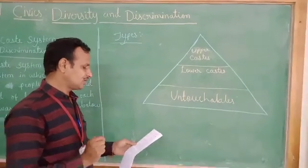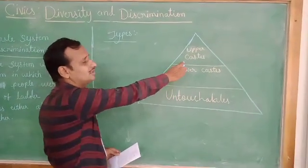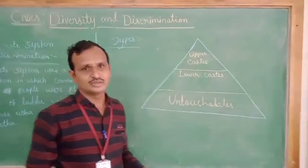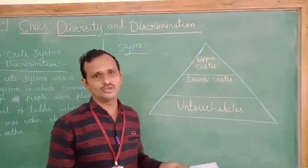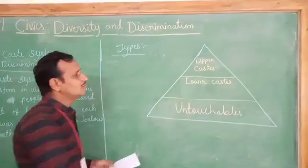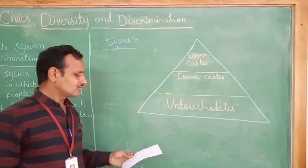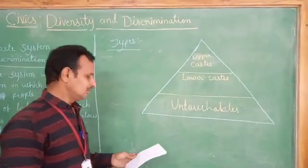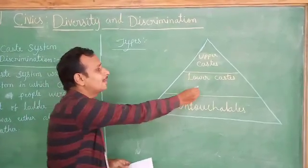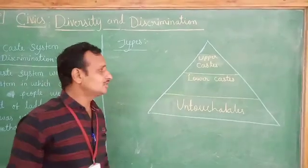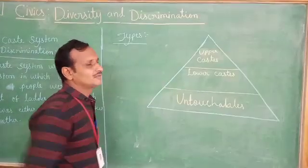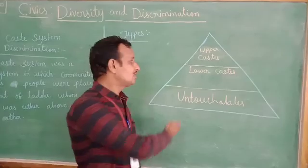The Brahmins are the highest of all castes. Traditionally, they are always teachers and priests — these are the most common jobs of the Brahmins. The second group is the lower caste. The section of the people who are placed at the lower side of the ladder are known as lower caste people. For example, merchants and other such people come under this caste.